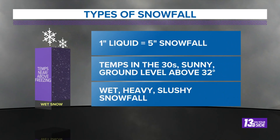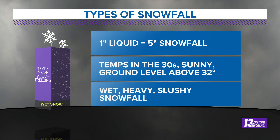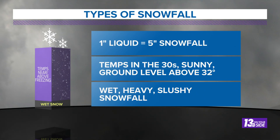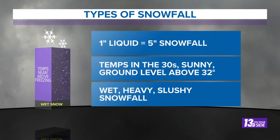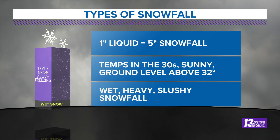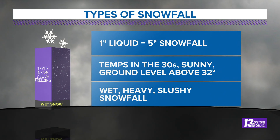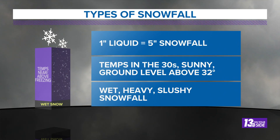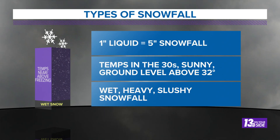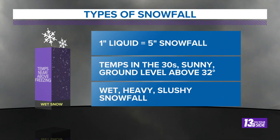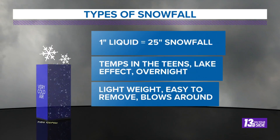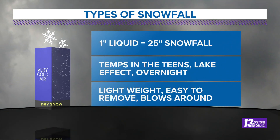When we get into wet snowfall, that actually happens because things are a little warmer. About one inch of liquid equals five inches of snowfall — much denser stuff falling. Temperatures closer to the freezing mark in the 30s, if not slightly above. It could also be affected by sunshine, which causes a little melting and gets the snow wetter, or by ground level being above freezing.